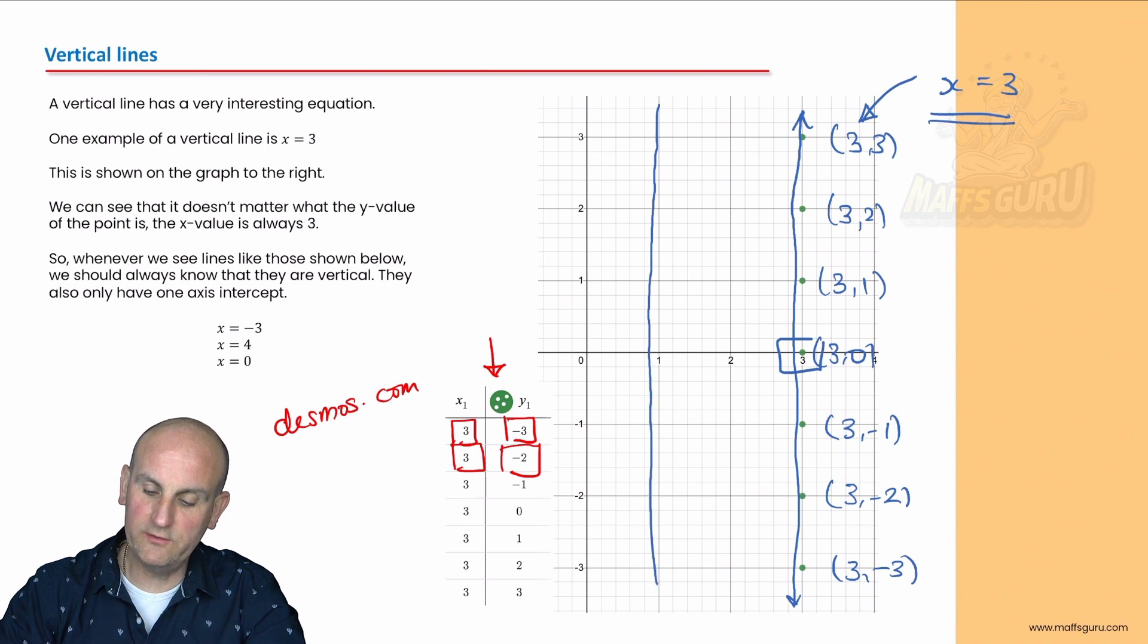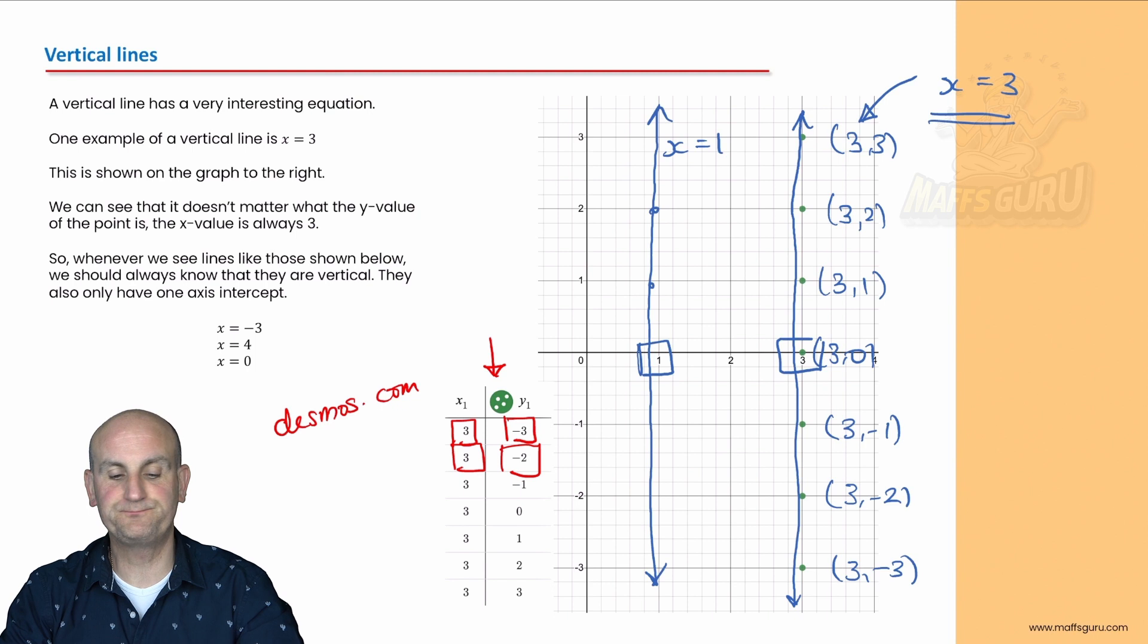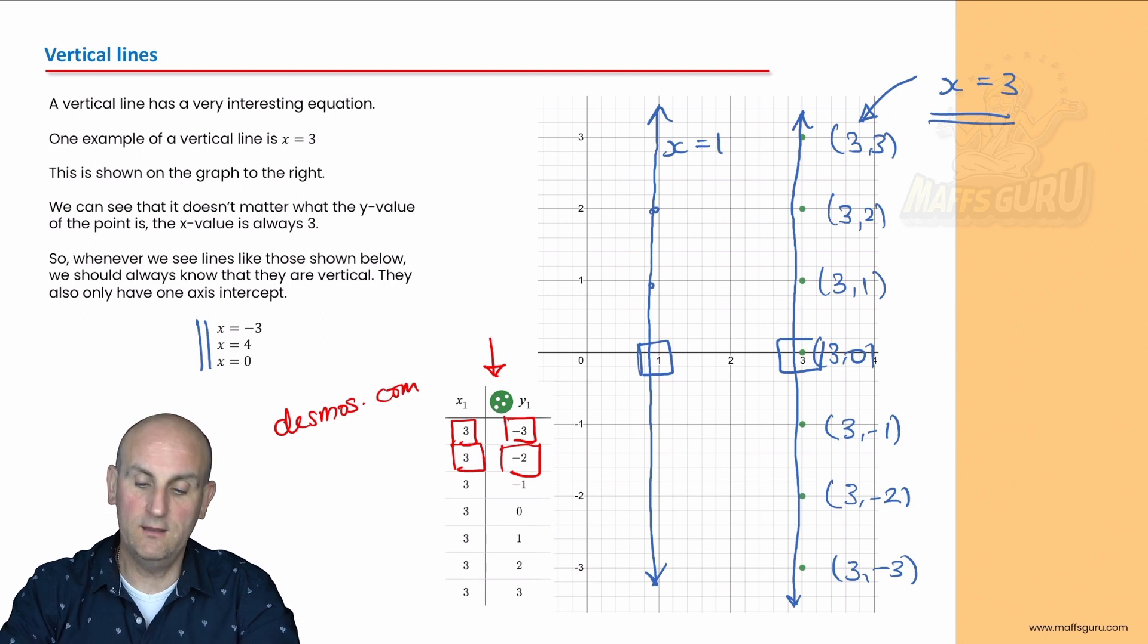Vertical lines start with x equals and whatever number it crosses on my intercept. If I was to draw a line here, it's supposed to go through the value of 1. Every single coordinate point on that line would have an x value equal to 1. These lines here are all examples: x equals minus 3, x equals 4, x equals 0. Where is x equals 0 going to be?